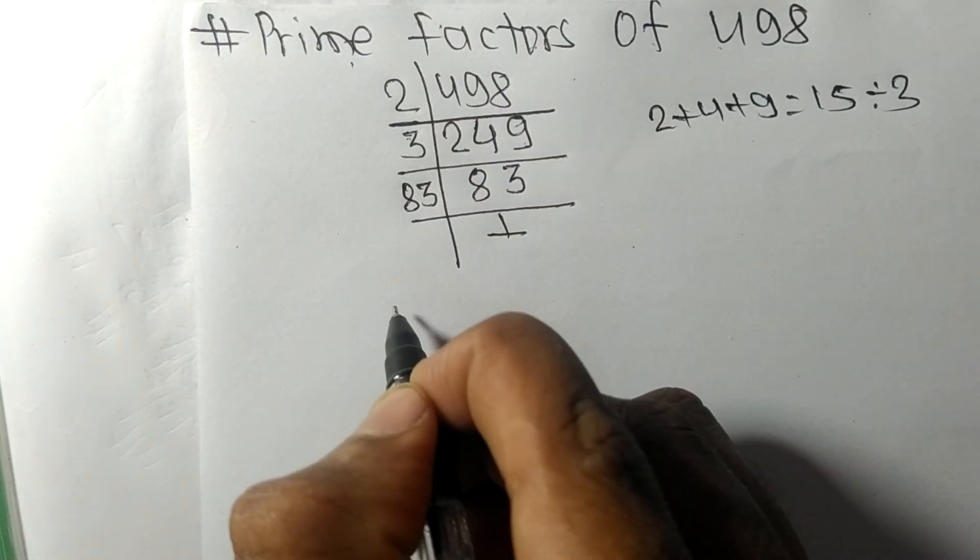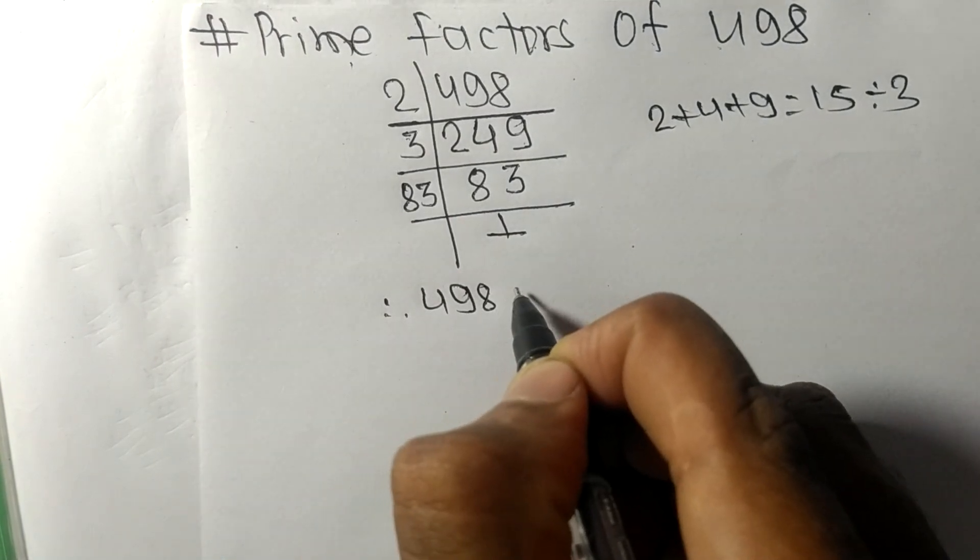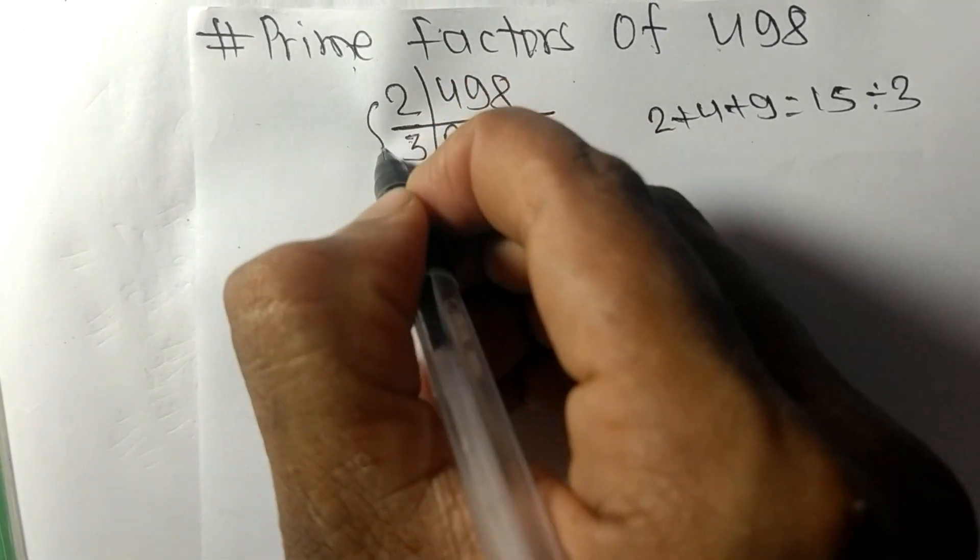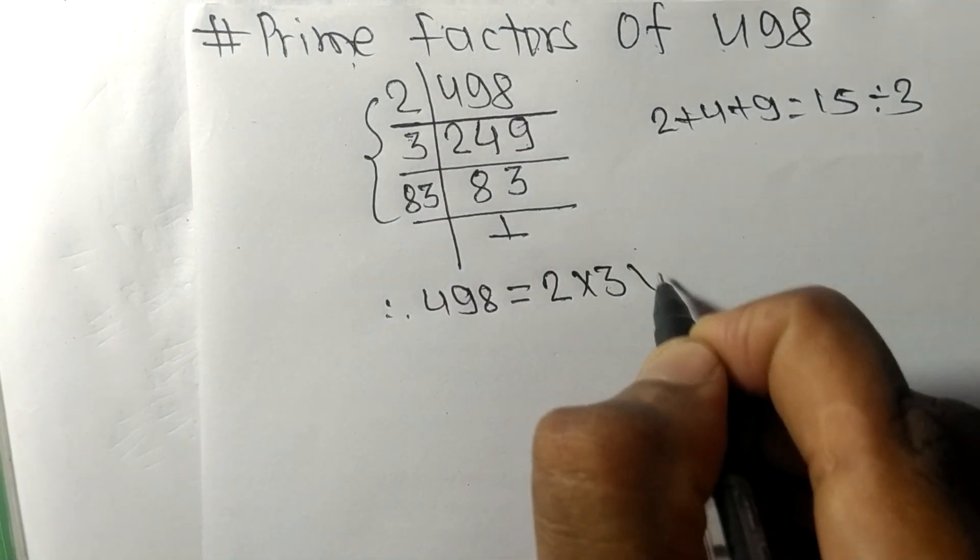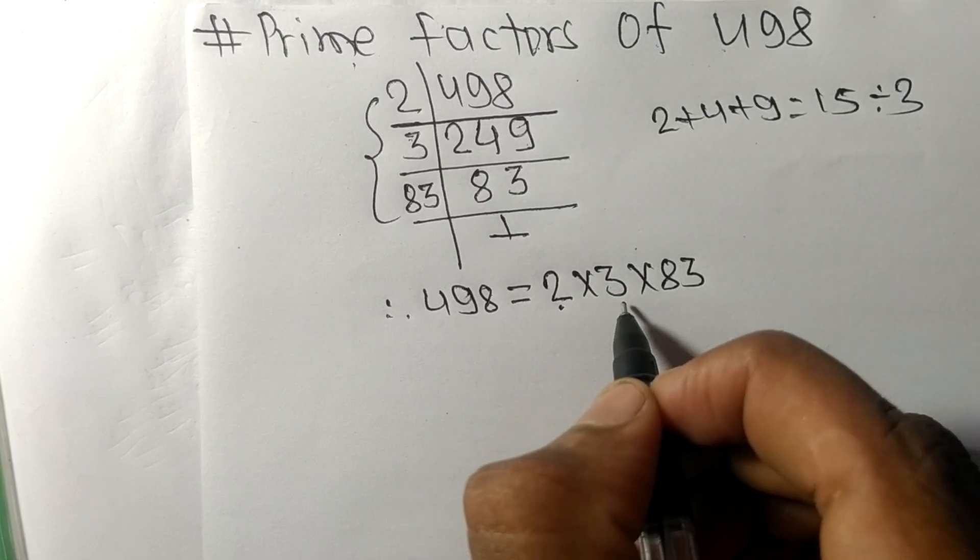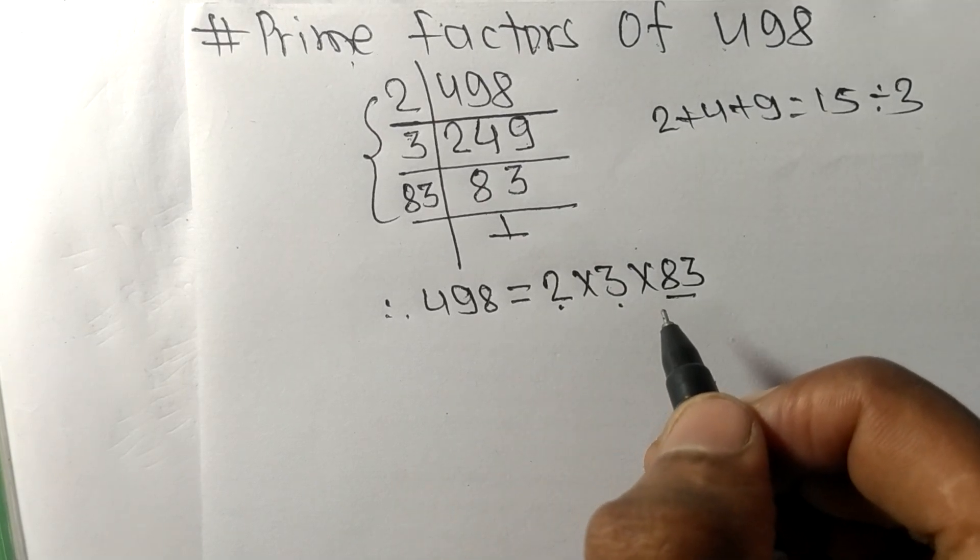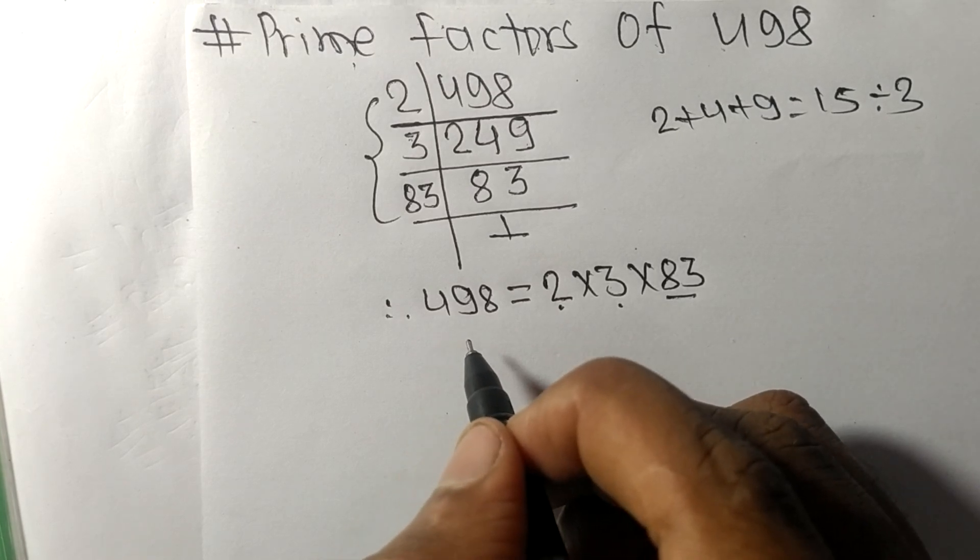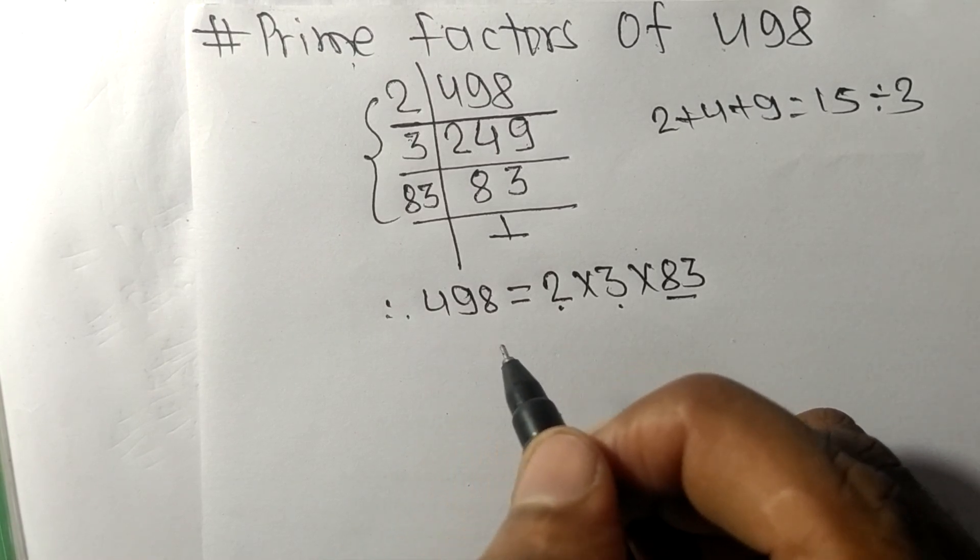get here 1. Therefore, 498 is equal to, from this side we have, 2 times 3 times 83. So 2, 3, and 83 are the prime factors of 498. This much for today, and thanks for watching.